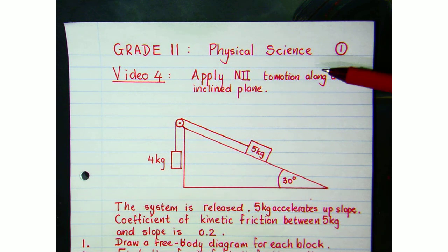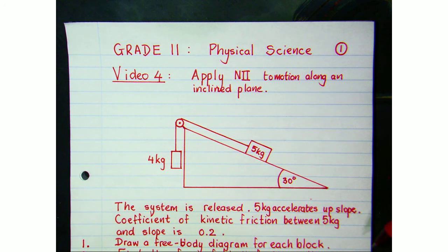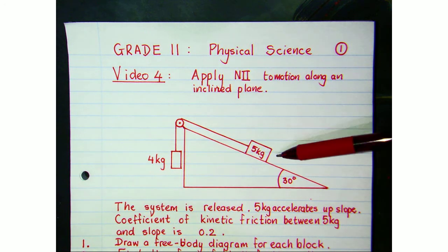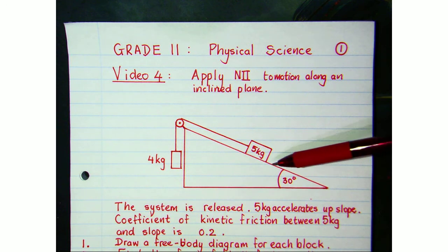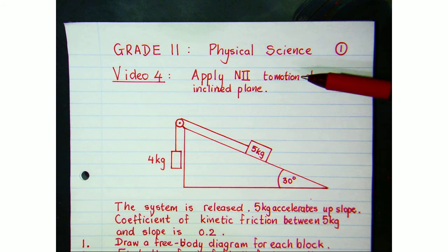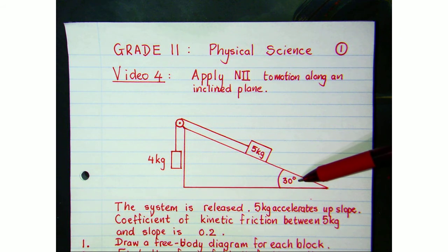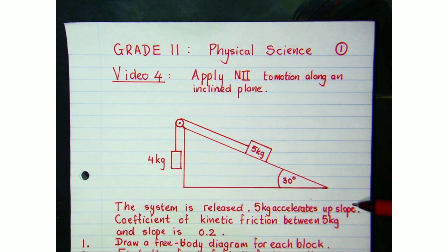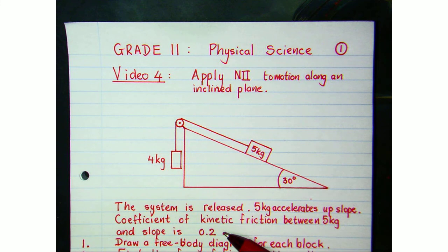This is video 4 of the Grade 11 chapter on Newton's laws. In this video we're going to apply Newton's second law to motion along an inclined plane. We've got two blocks: a 4 kg hanging vertically and a 5 kg sliding up a rough slope. The slope is inclined at 30 degrees to the horizontal, the system accelerates with the 5 kg going up, and the coefficient of kinetic friction is 0.2. In question 1, draw a free body diagram for each block.